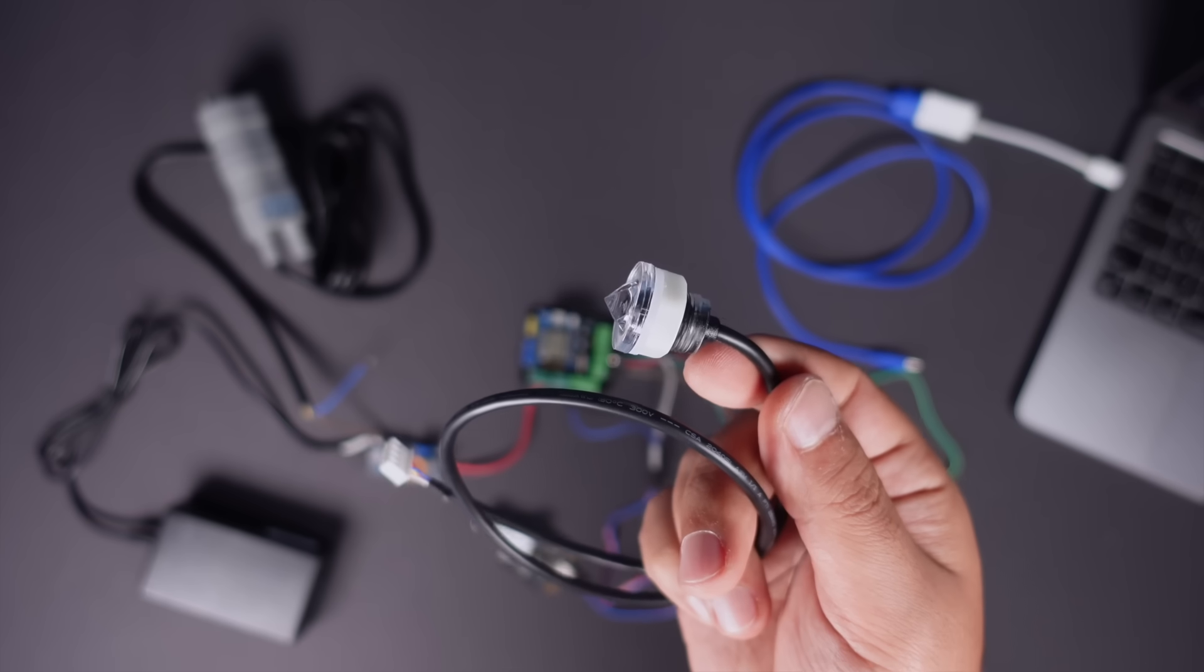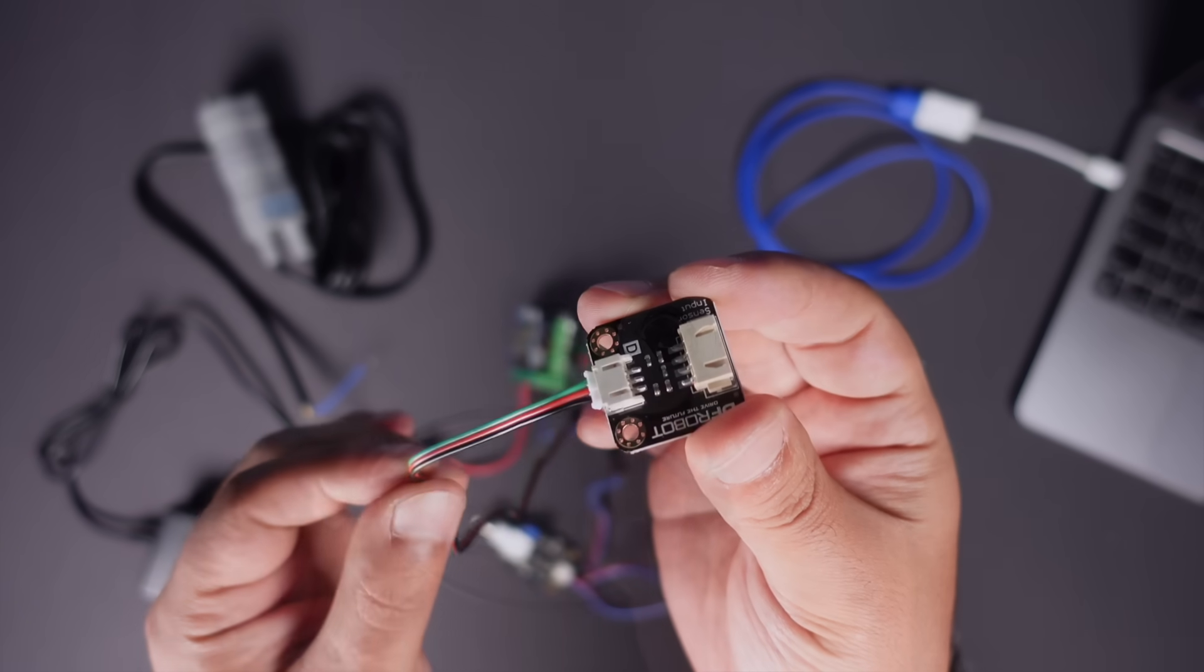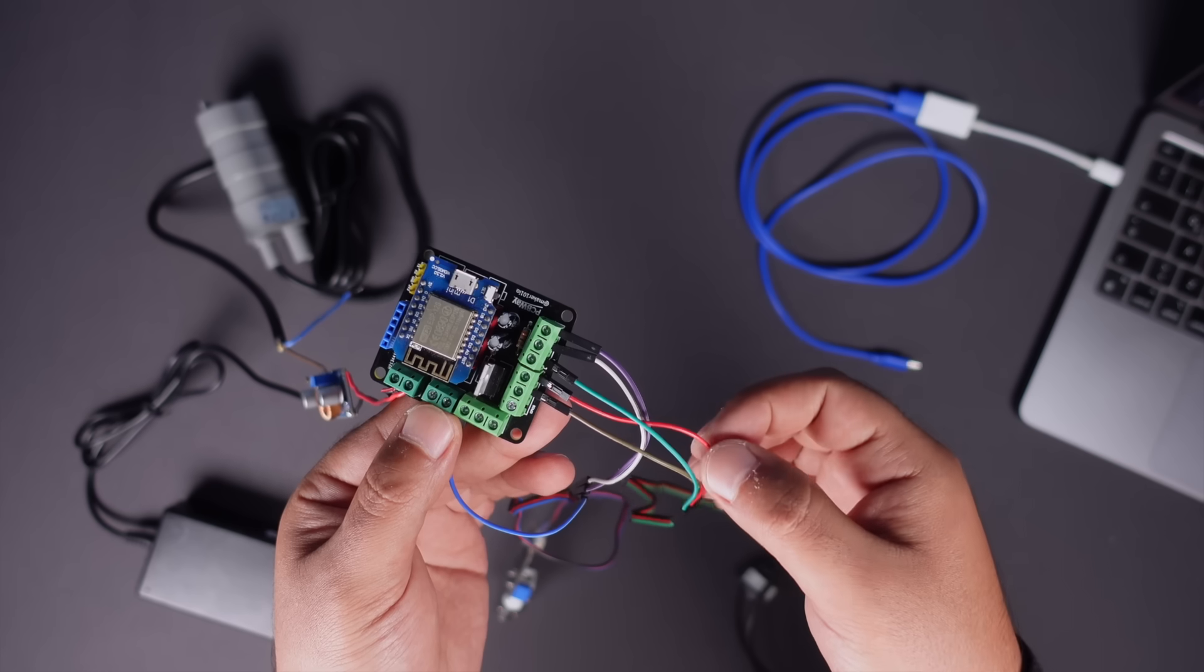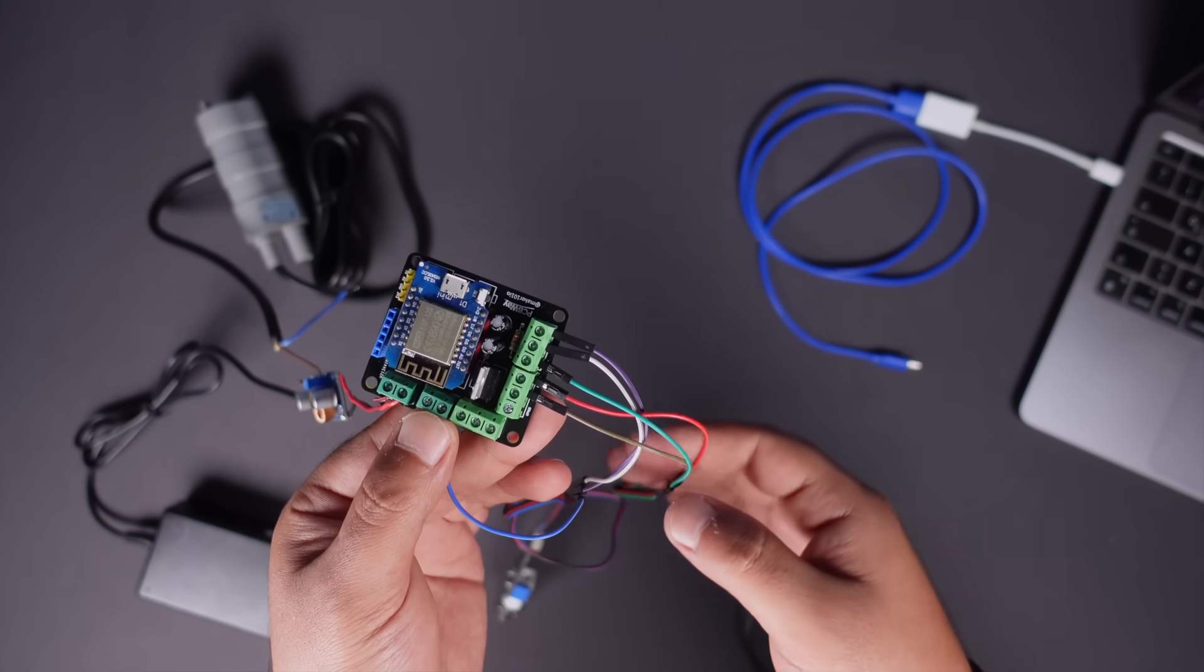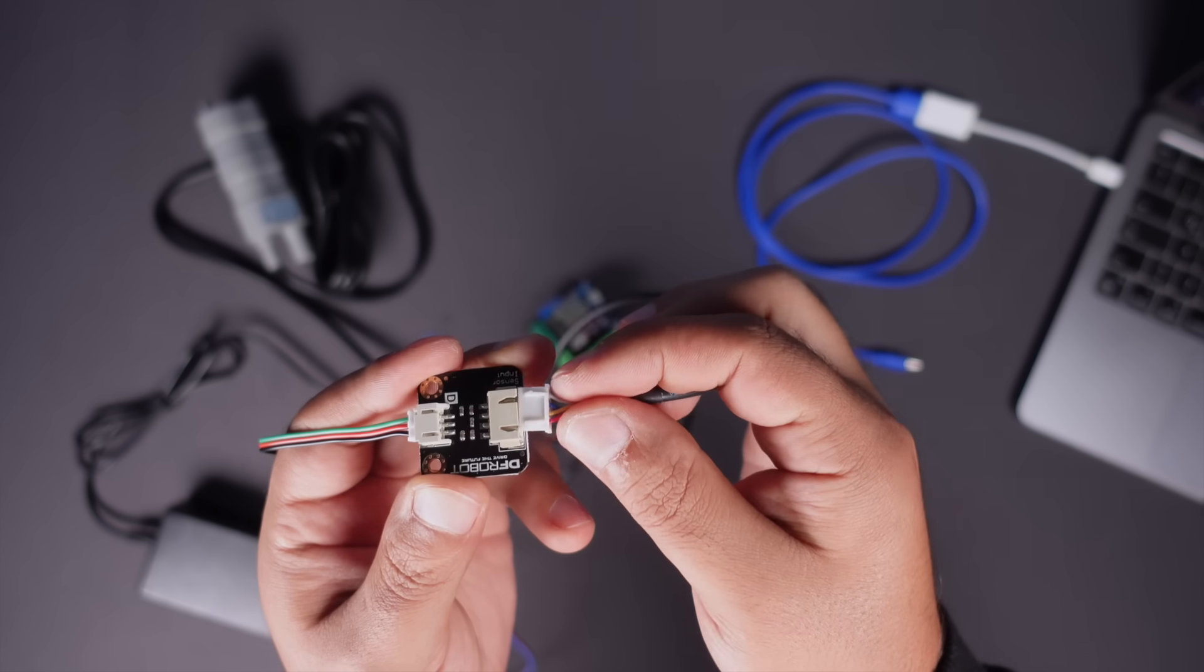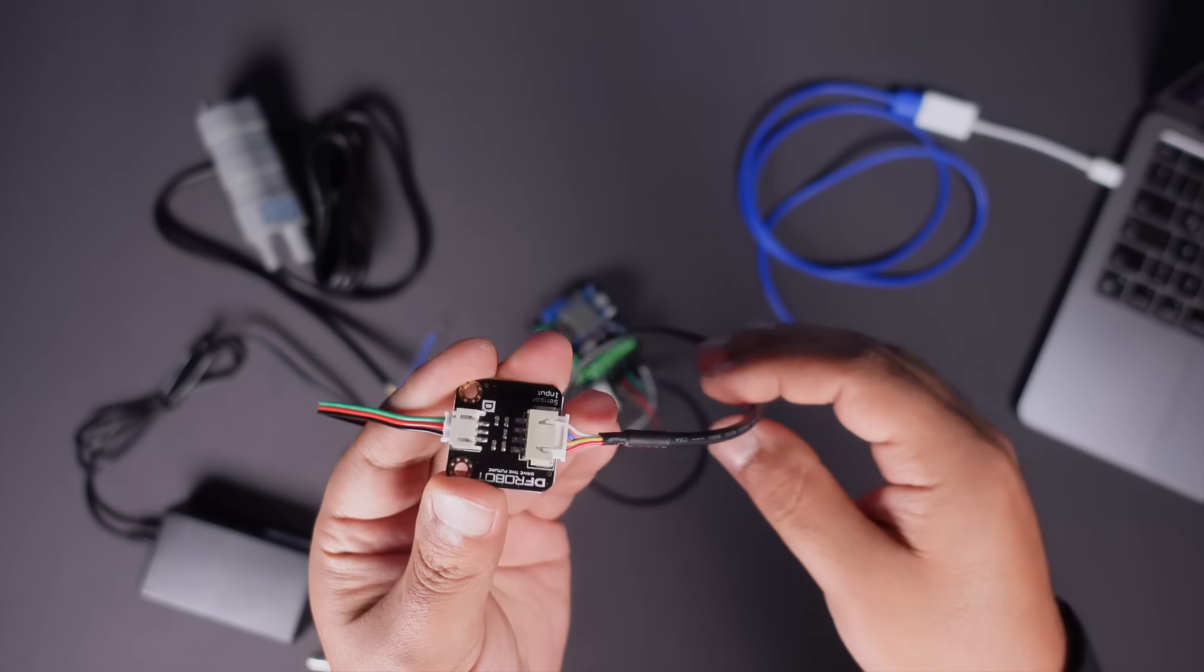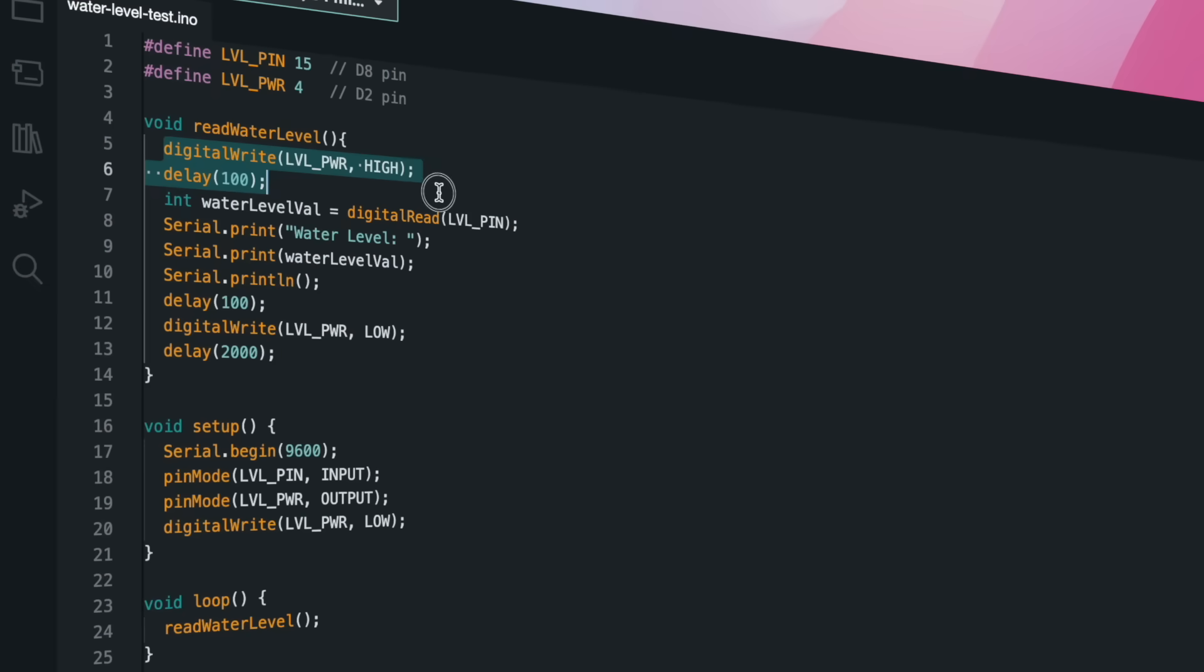Now let's connect the liquid level sensor to the circuit and test it. The level sensor signal input is connected to the digital pin of the board. The sensor-powered input is also connected to a digital pin and will be powered by the high signal only at the time of measurement. The reason for this is to extend the life of the sensor, which is constantly exposed to liquid, and to ensure that it can be used for a longer period of time.